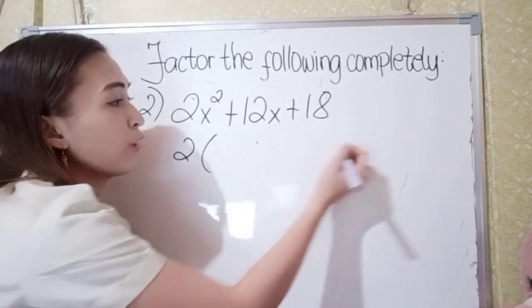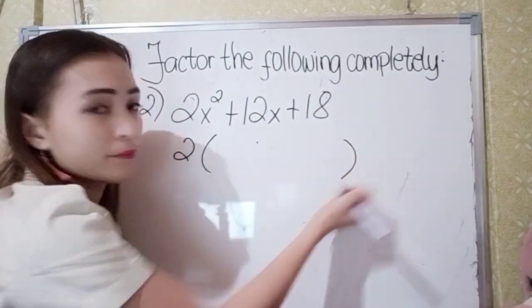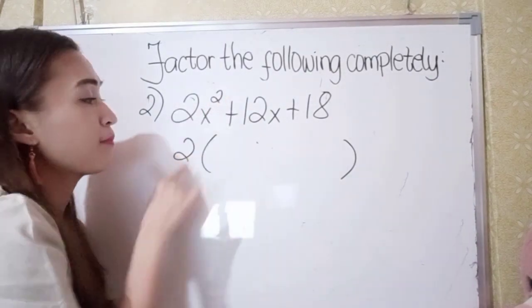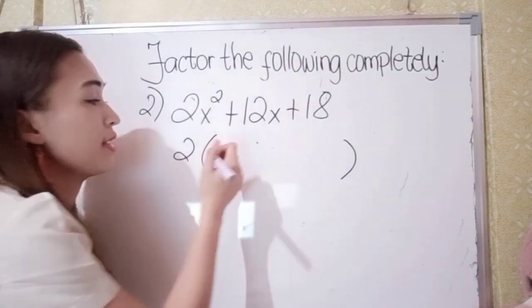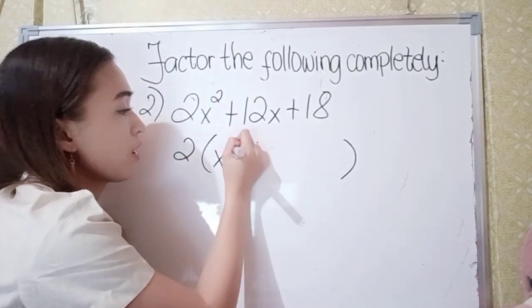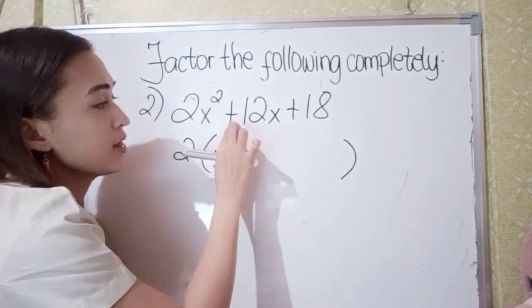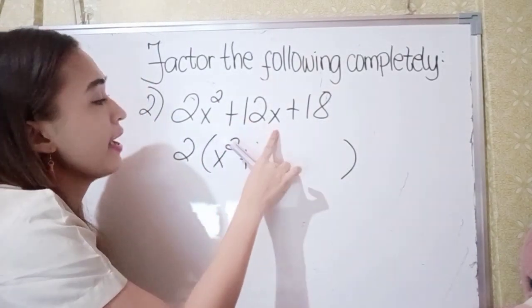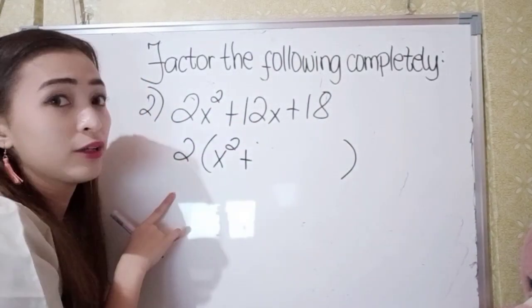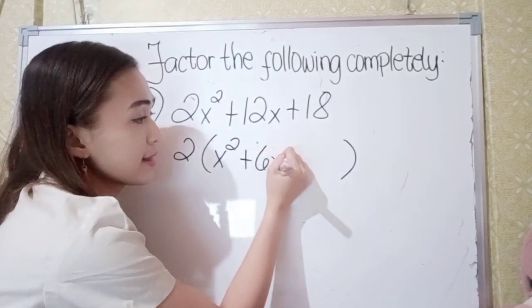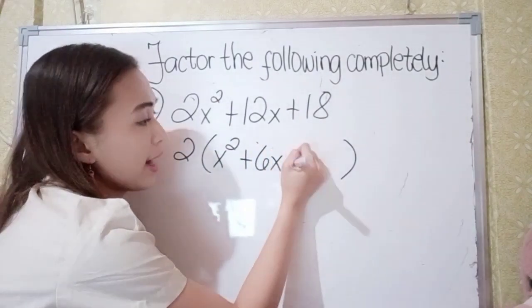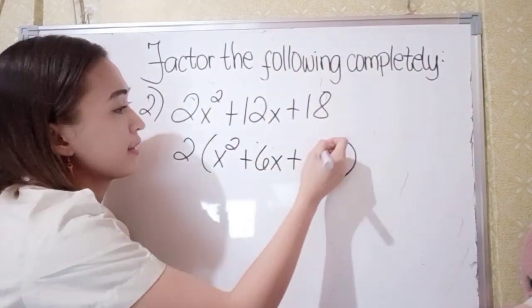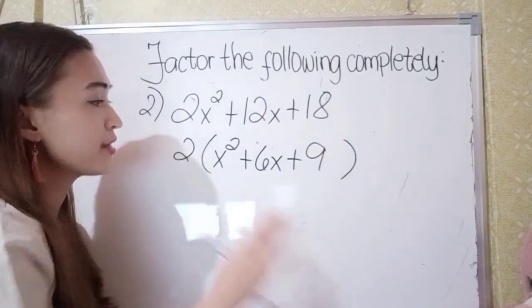Now, let's group. 2x squared divided by 2 is x squared, plus 12x divided by 2 is 6x, plus 18 divided by 2 is 9.